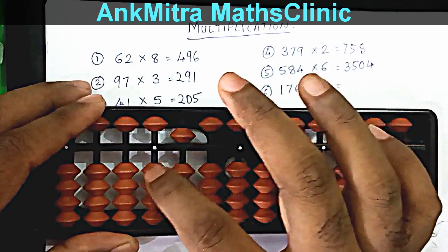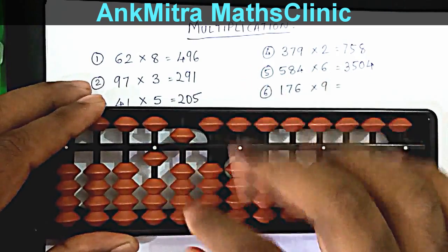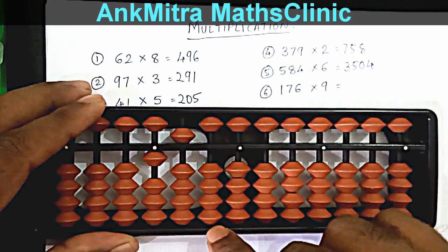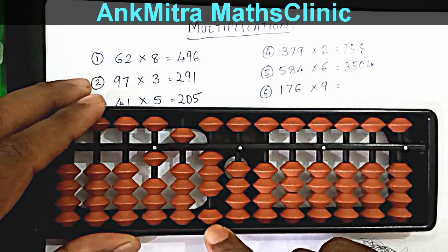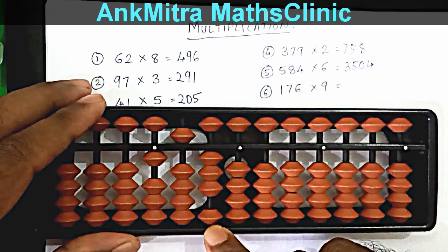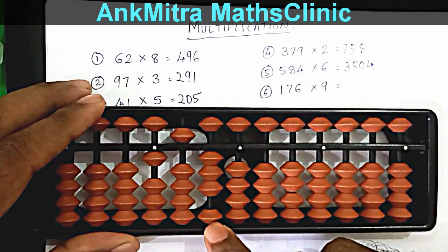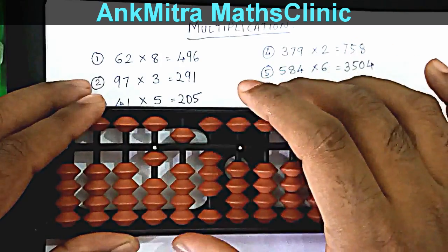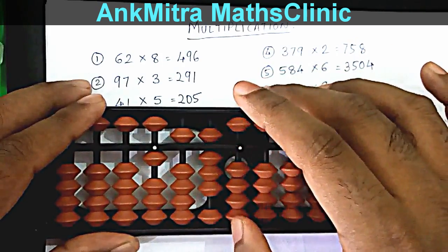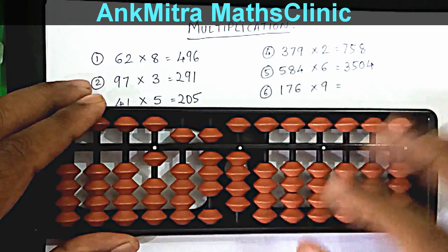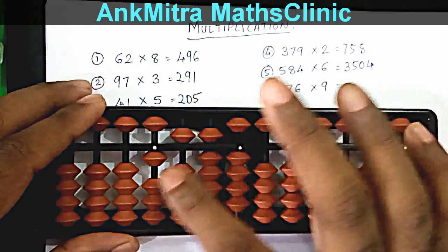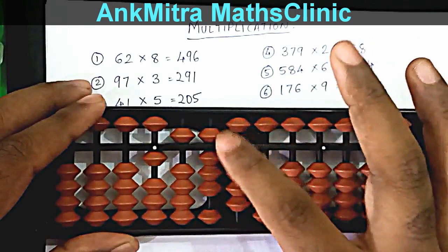For adding 6 on the third rod, use plus 10 minus 4 (the big friend formula for 6), then 3 directly on the tens place. The final step is 6 times 9 = 54, added from the tens rod — 50 is available and 4 is also available directly. The answer for 176 multiplied by 9 is 1584.